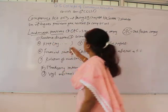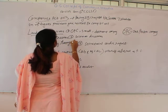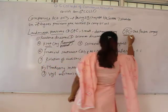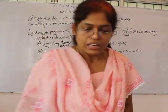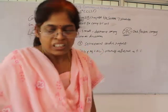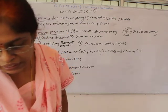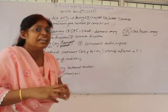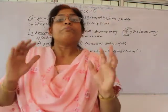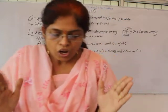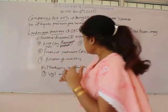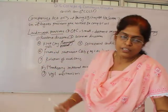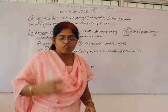Key Managerial Personnel, or KMP, is a new concept introduced in the Companies Act 2013. These KMP are not a single person but personnel — key managerial personnel. They may be in the form of a Managing Director, a CEO that is Chief Executive Officer, a Company Secretary, or a Chief Financial Officer — that is CFO. So two or three new terms: Managing Director, Chief Executive Officer, Company Secretary, and Chief Financial Officer.